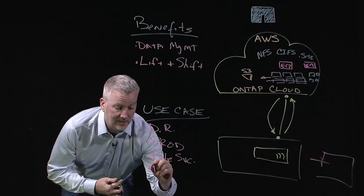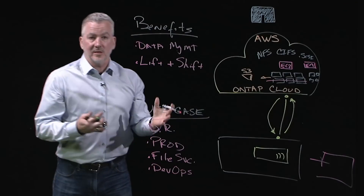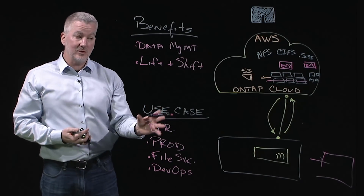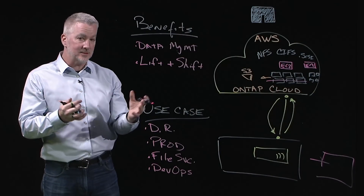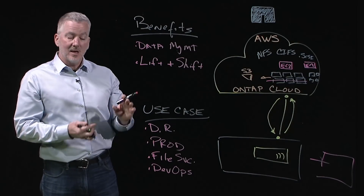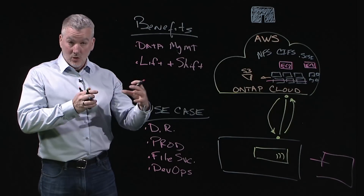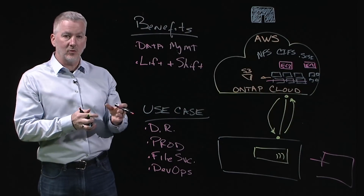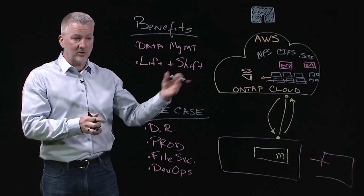One more use case I want to mention is DevOps. The cloud is a great playground for developing new technologies. You can do a lot of elasticity with your compute, but elasticity with your data is sometimes more difficult to achieve. This is where NetApp's FlexClone technology makes it easy to spin up space-zero capacity clones of your data and make them available to developers immediately, whereas in the public cloud you'd have to carve out additional storage containers and copy that data, making your developers wait.